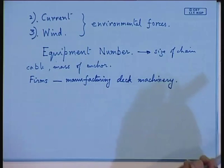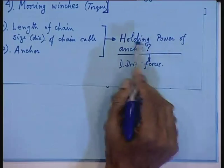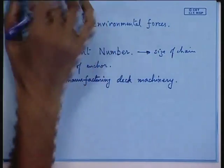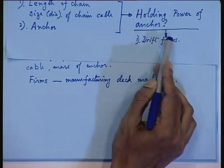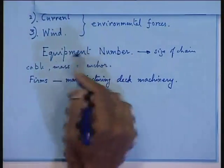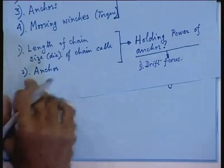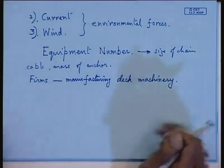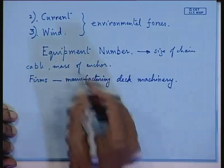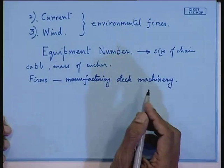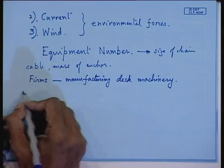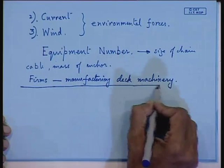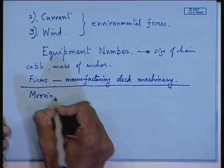To proceed: first calculate all forces coming to the ship — drift forces, current, wind, and horizontal wave forces. From that, calculate the holding power of the anchor, then refer to the equipment numeral in Lloyd's or ABS, and from that calculate all the sizes. In the case of offshore platforms, the calculation of environmental forces is much more difficult, and there are elaborate computer programs which calculate the mooring systems.